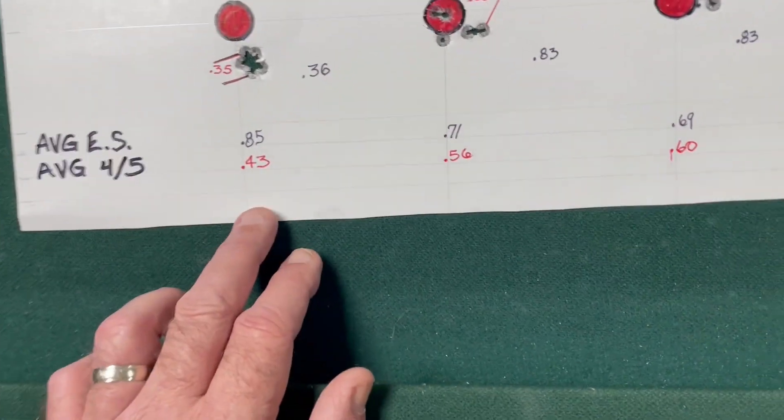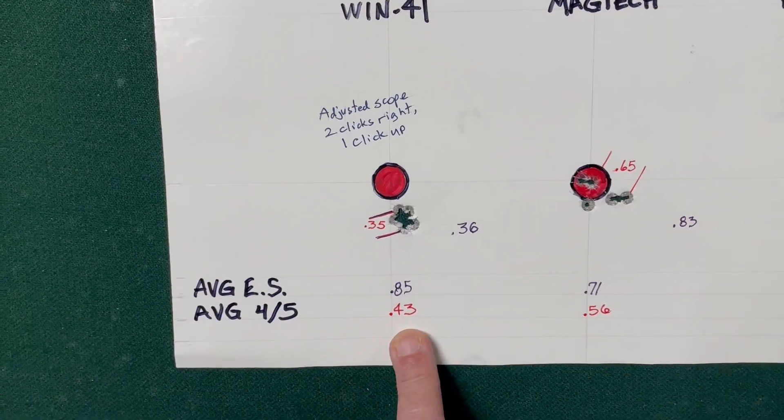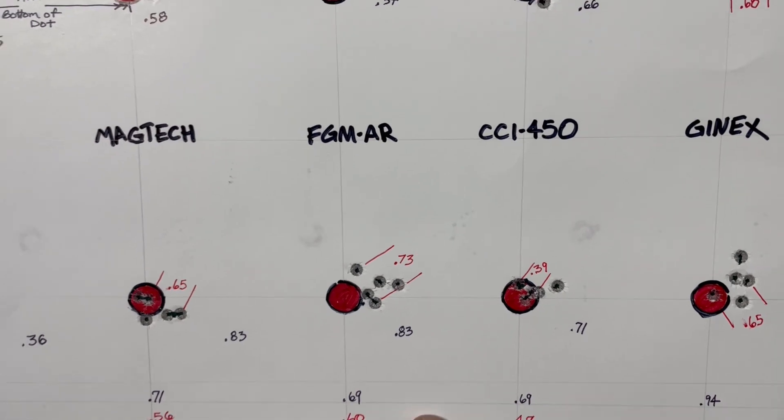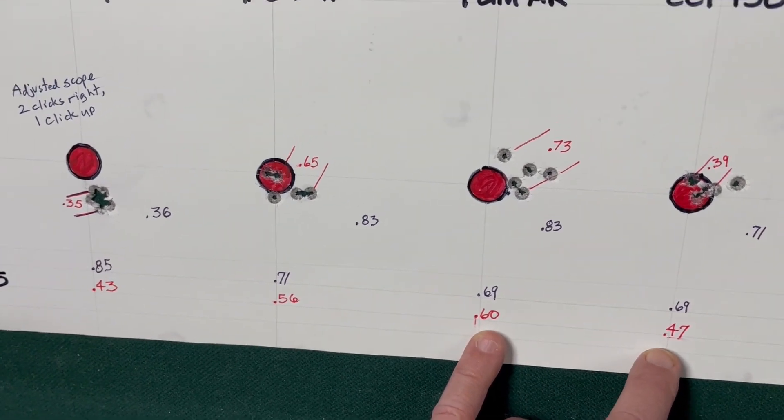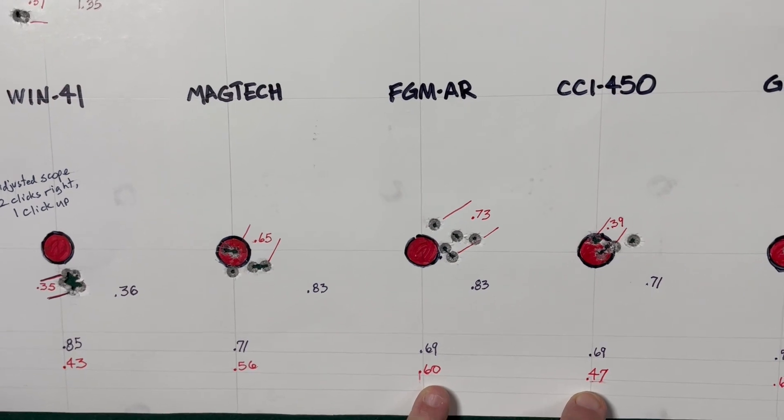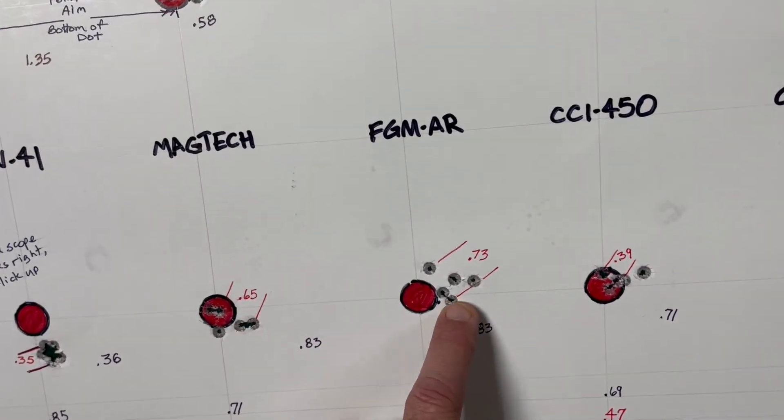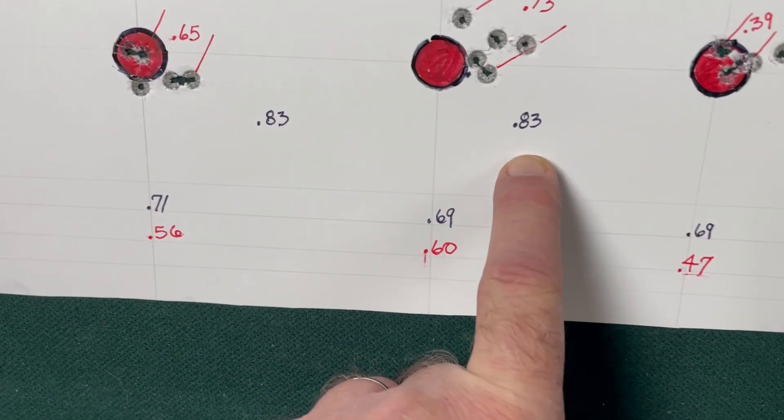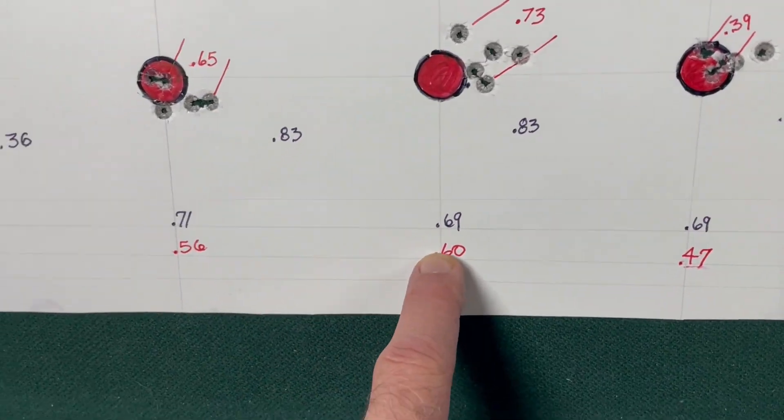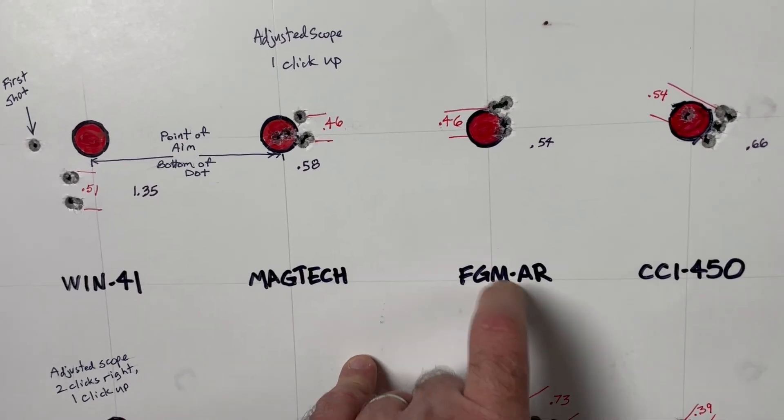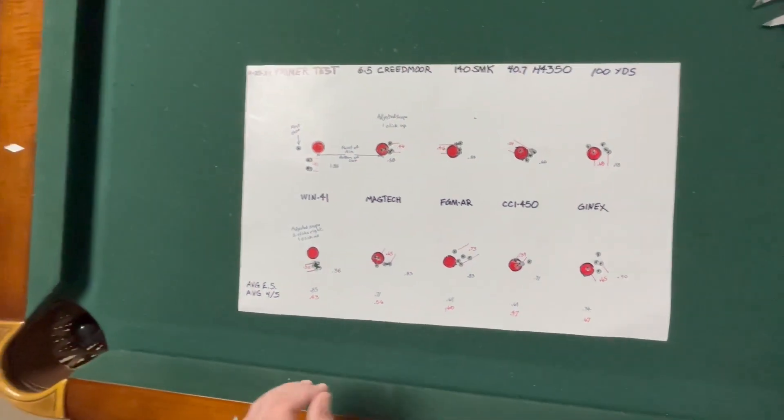So overall, the Winchester 41 performed best on the four out of five at .43 inches. Federal gold medal and CCI 450 matched each other on the extreme spread. But on the best four out of five, CCI had the lower score at .47. That's because on the federal gold medal, even though you had a best four out of five at .73, you had an extreme spread of .83. But on that first group, it was .54 and that extreme spread there pulled that average way down. Otherwise, the federal gold medal AR had an excellent group here. So there you have it. There's my analysis of these primers.